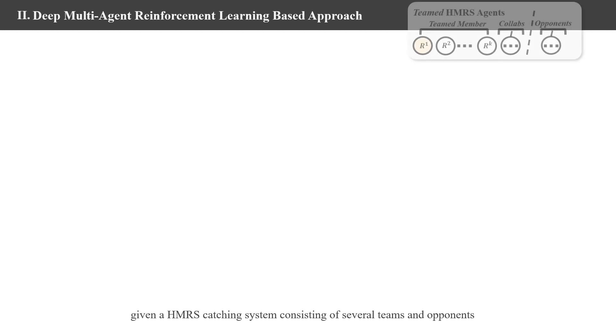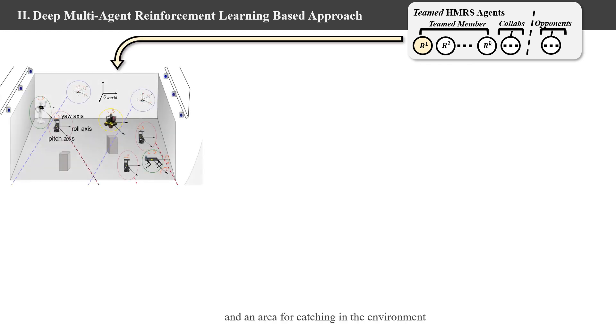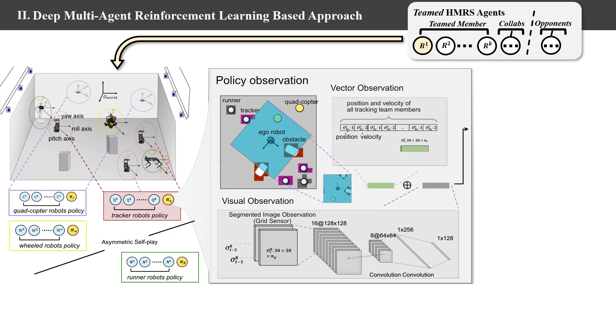Given an HMRS catching system consisting of several teams and opponents, and an area for catching in the environment, the HMRS catching system consists of several collaborating teams acting together, with each team having several multi-agent policies.